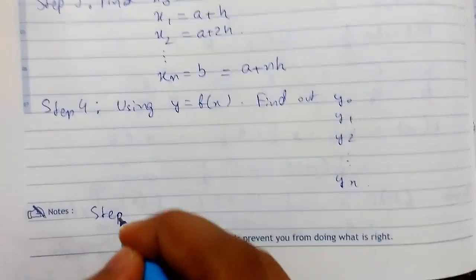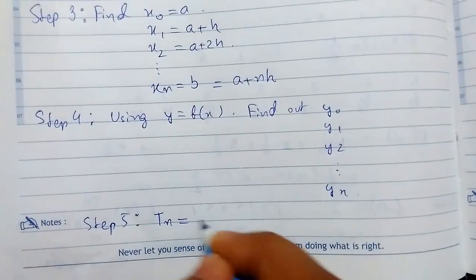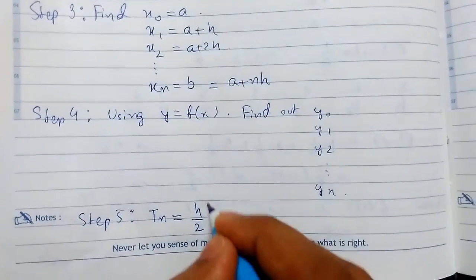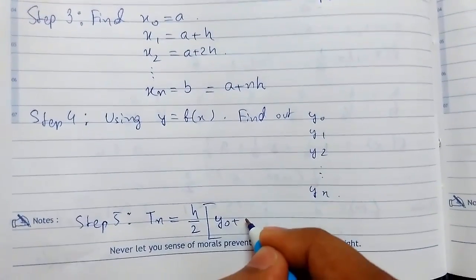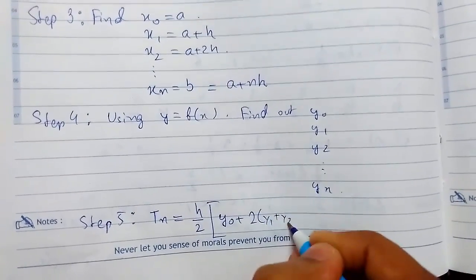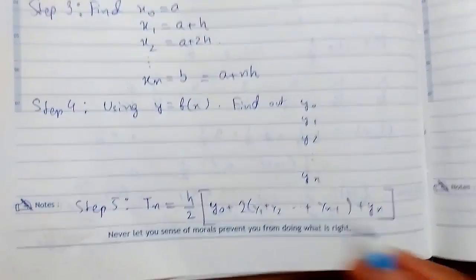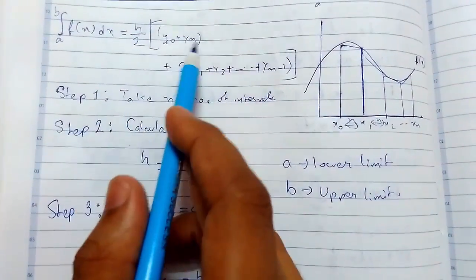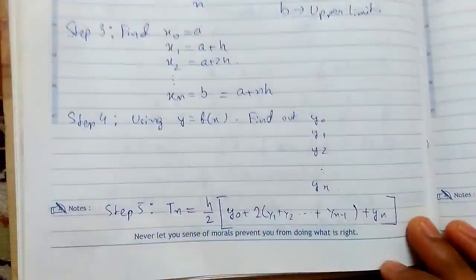Step 5, the final step - You can write T(n) = (h/2) × [y0 + 2(y1 + y2 + ... + yn-1) + yn]. It's sometimes written this way to show the complete series. The first and last terms are not multiplied by 2, while all the middle terms are multiplied by 2. These were the steps.